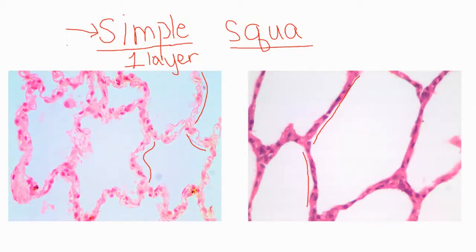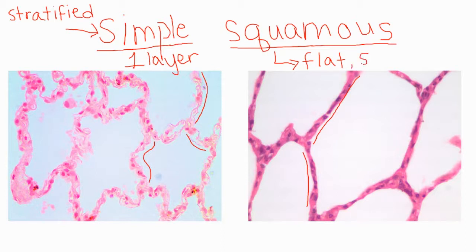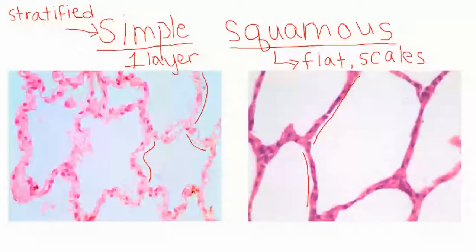When I start talking about more than one layer of cells, you'll see the word 'stratified.' Stratified means there's more than one layer. So we're looking at simple epithelium — one layer of cells. The second part of the name is 'squamous.' When we talk about squamous cells, think of flat cells — technically the word means scales, kind of like scales on a fish. Think about flat, scaly cells that look maybe kind of circular, like a squished circle.